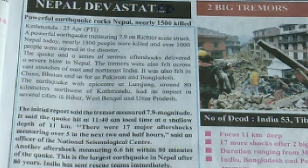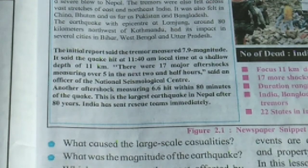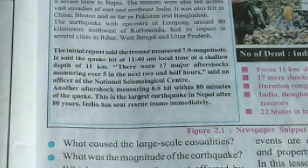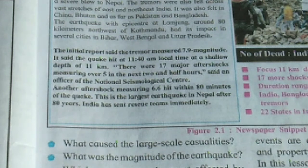The earthquake had an impact in several cities in Bihar, West Bengal and Uttar Pradesh. The initial report said the tremor measured 7.9 magnitude. The quake hit at 11:40 AM local time at a shallow depth of 11 km. There were 17 major aftershocks measuring over 5 in the next two and a half hours, said an officer of the National Seismological Centre. Another aftershock measuring 6.6 hit within 80 minutes of the quake. This was the largest earthquake in Nepal in 80 years. India sent a rescue team immediately.